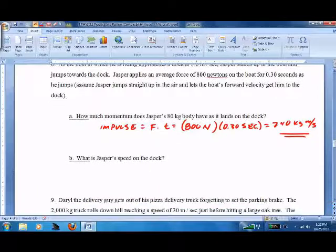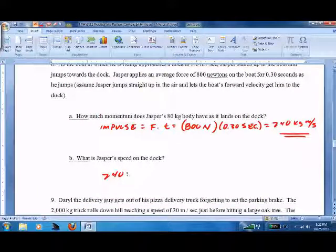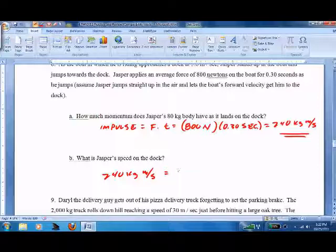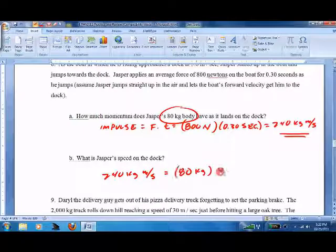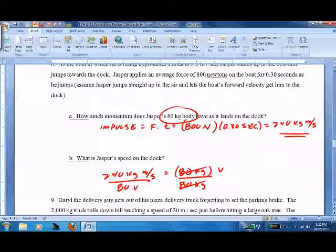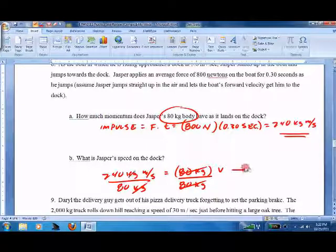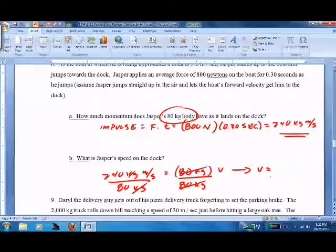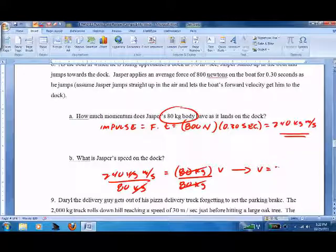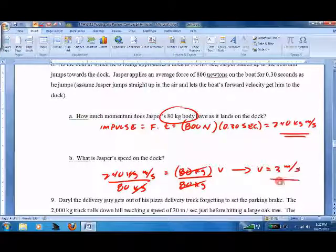Speed on the dock - he's got 240 kg meters per second. That's equal to his mass, which we know from up here is 80 kg, times his velocity. Divide both sides by 80, we get velocity equals 3 meters per second, which miraculously is the same velocity as the boat.